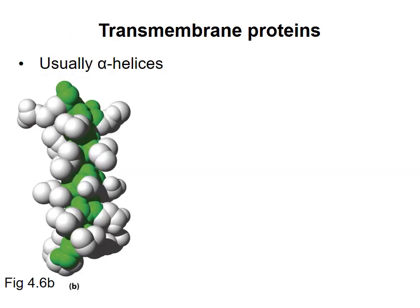Proteins usually span the membrane using the alpha helical secondary structure. In an alpha helix, the polar groups of the backbone make hydrogen bonds with each other, shown in green here. This arrangement is particularly stable in the hydrophobic interior of the membrane because there are no other hydrogen bonding groups to bond to. The side chains stick out from the center of the helix and are exposed to the surroundings, so in a transmembrane alpha helix you would expect to see a bunch of hydrophobic side chains all in a row. It takes about 20 amino acid residues to cross a typical membrane, and you can often predict transmembrane segments by looking for a series of 20 or more consecutive hydrophobic residues.